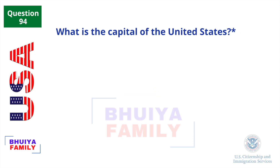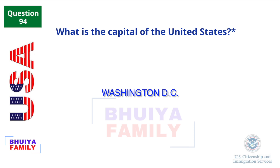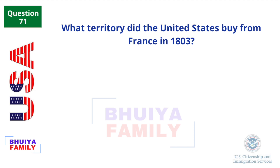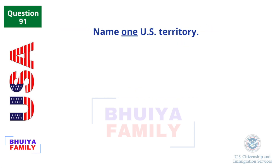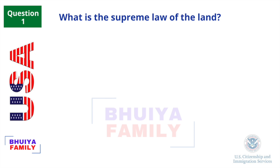What is the capital of the United States? Washington, D.C. What territory did the United States buy from France in 1803? The Louisiana Territory. Name one U.S. territory. Guam. What is the supreme law of the land? The Constitution.